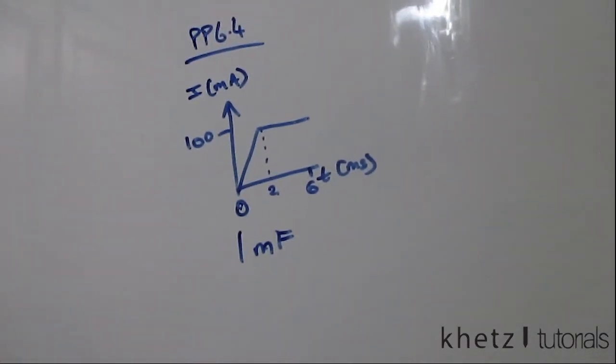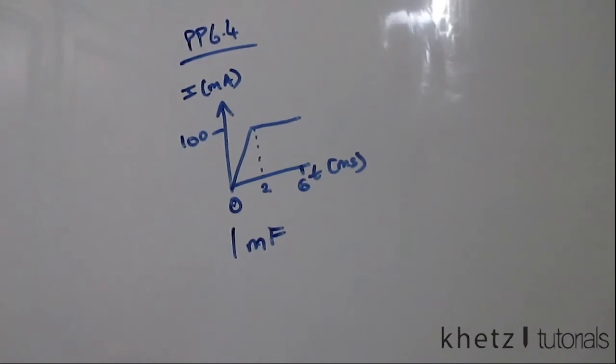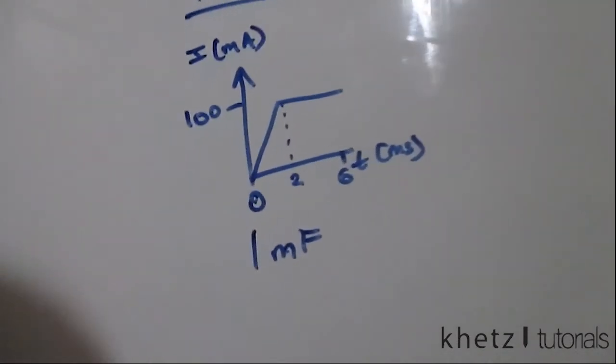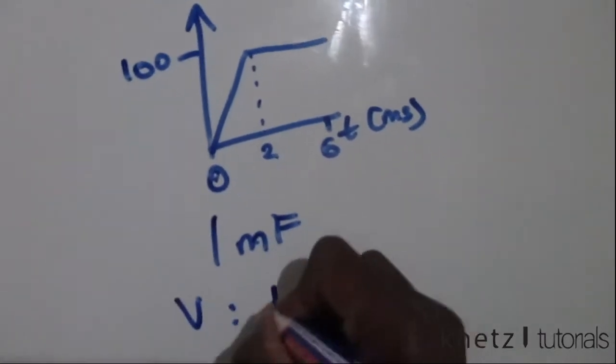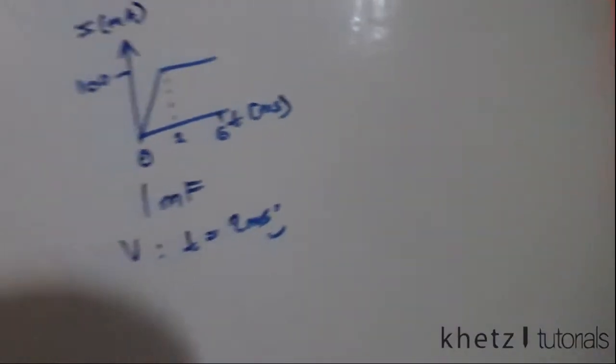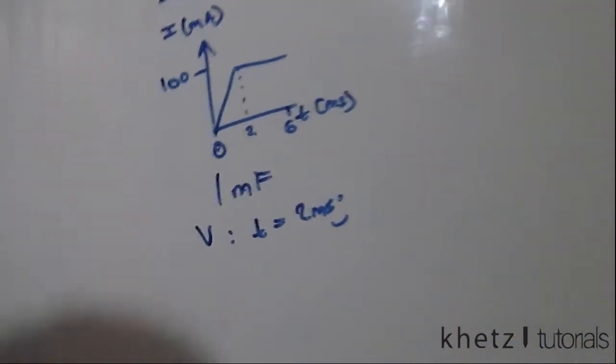There's a current shown in the graph, and we also need to calculate the voltage at times t equals two milliseconds and time t equals five milliseconds.